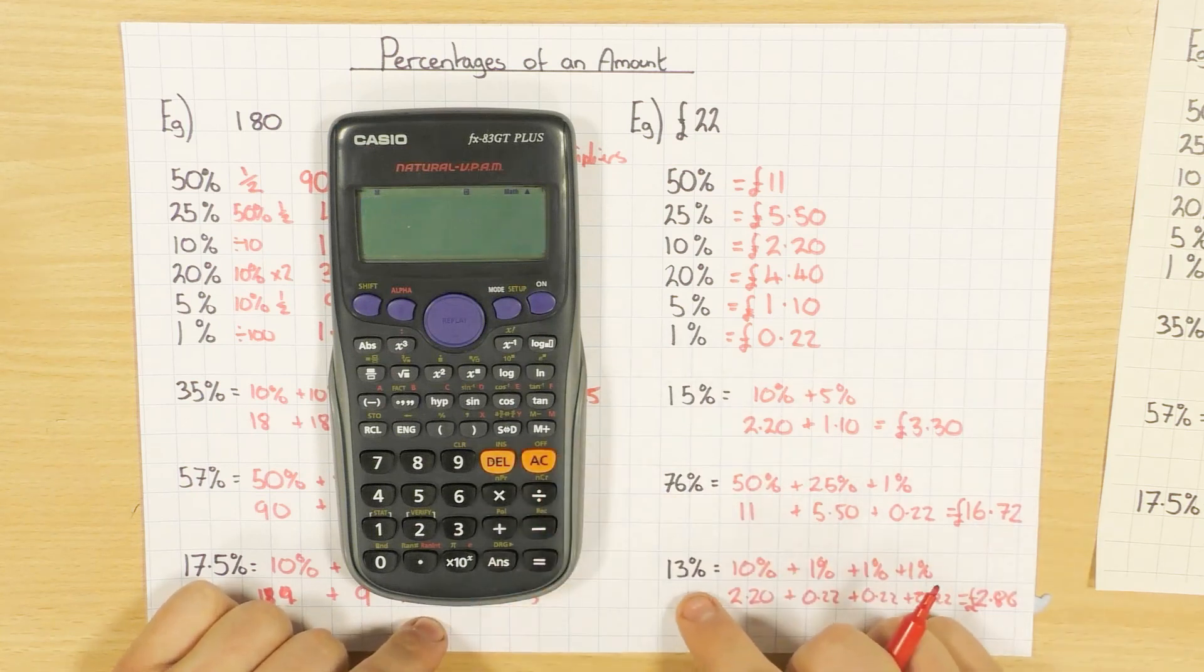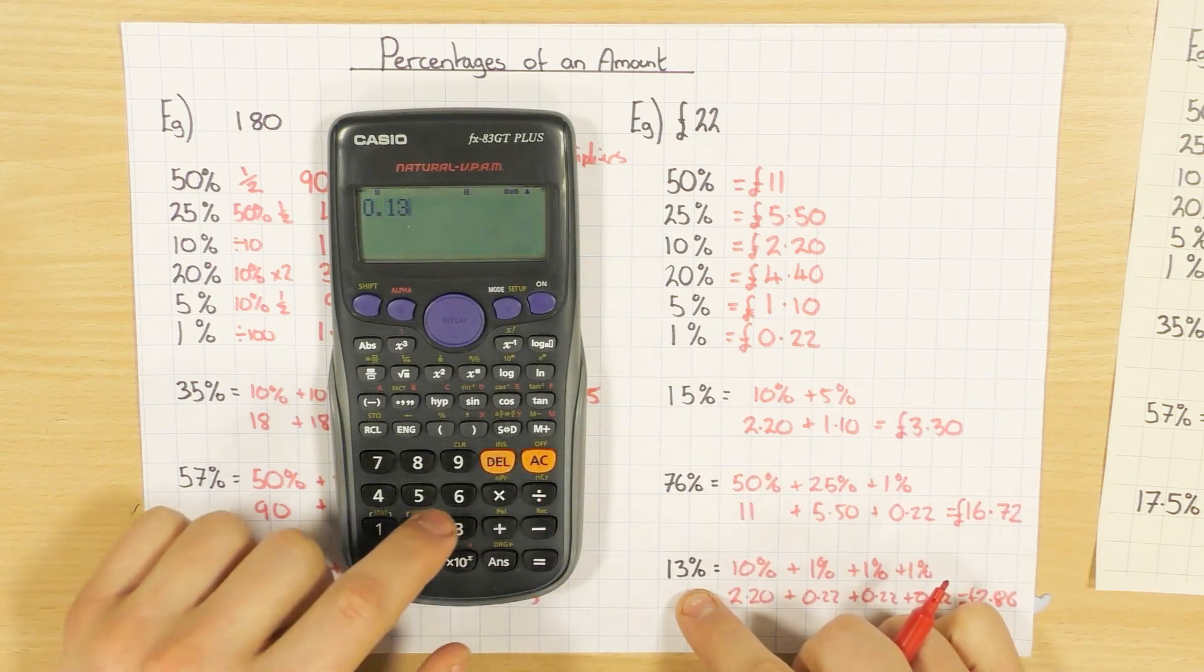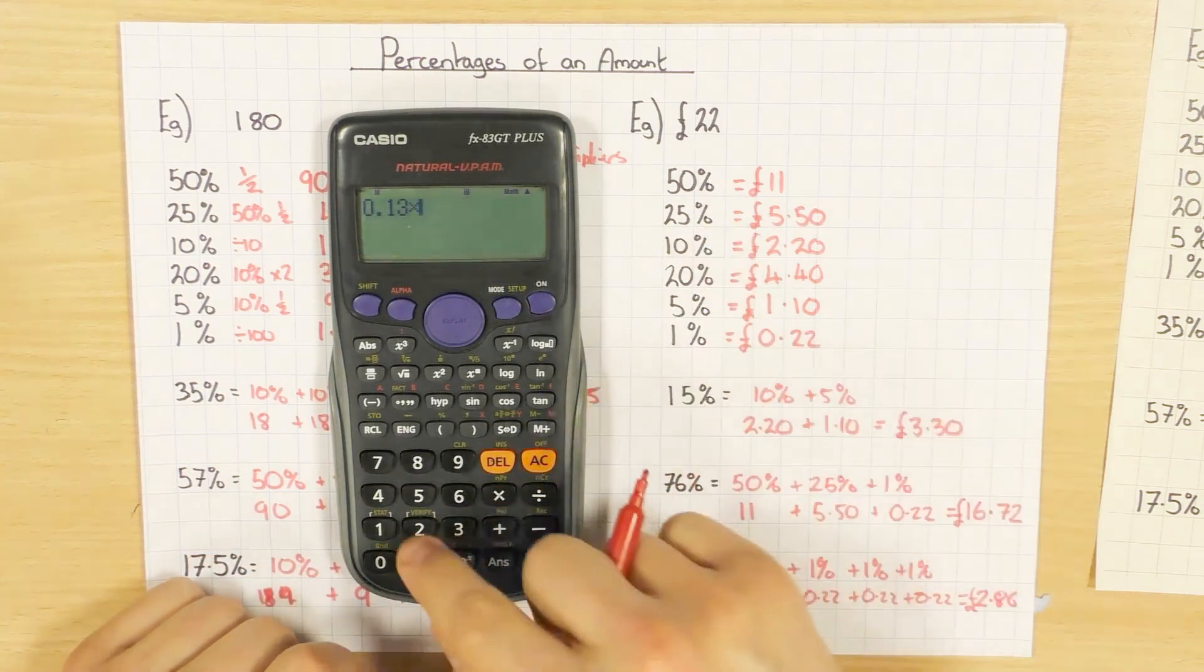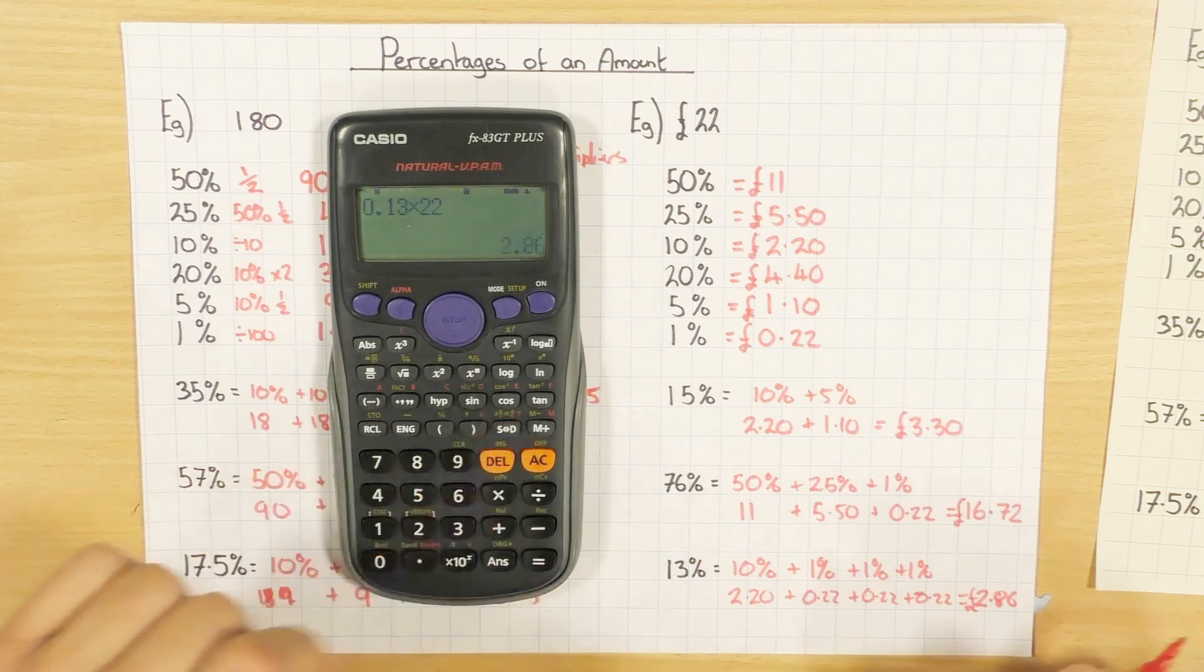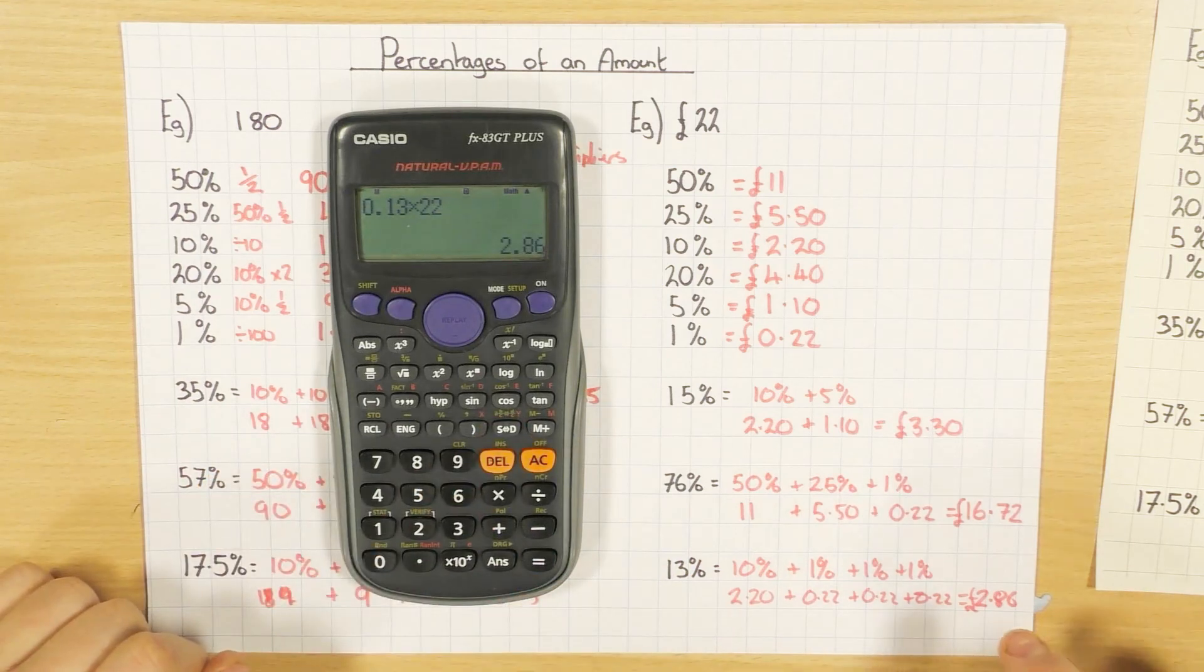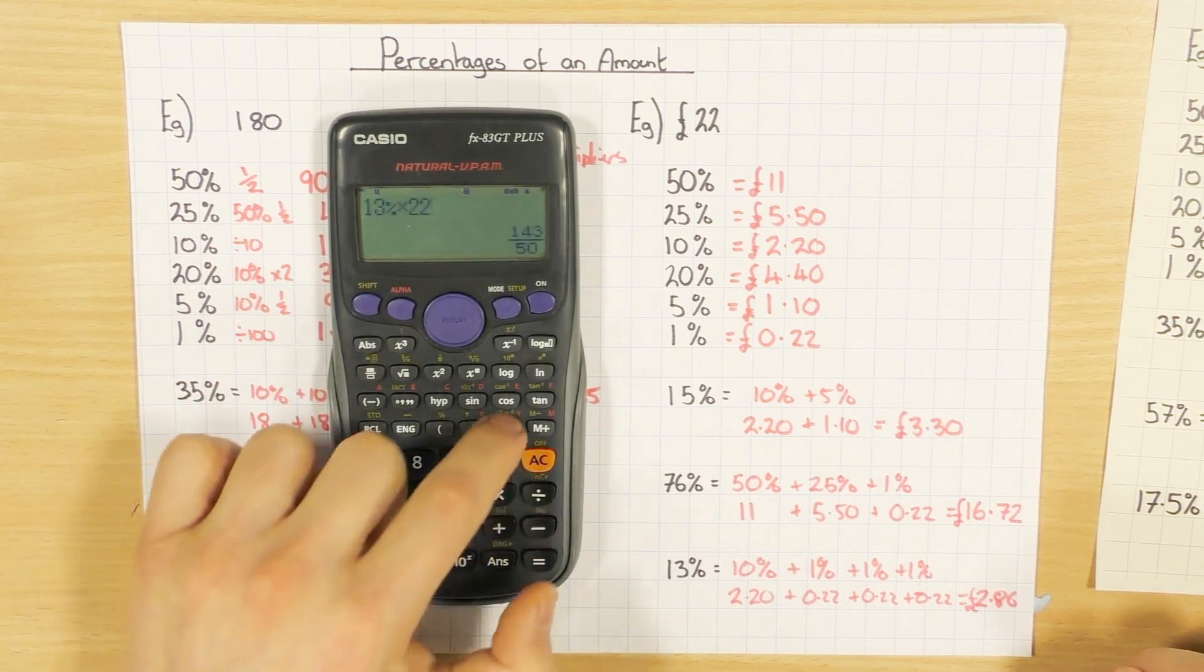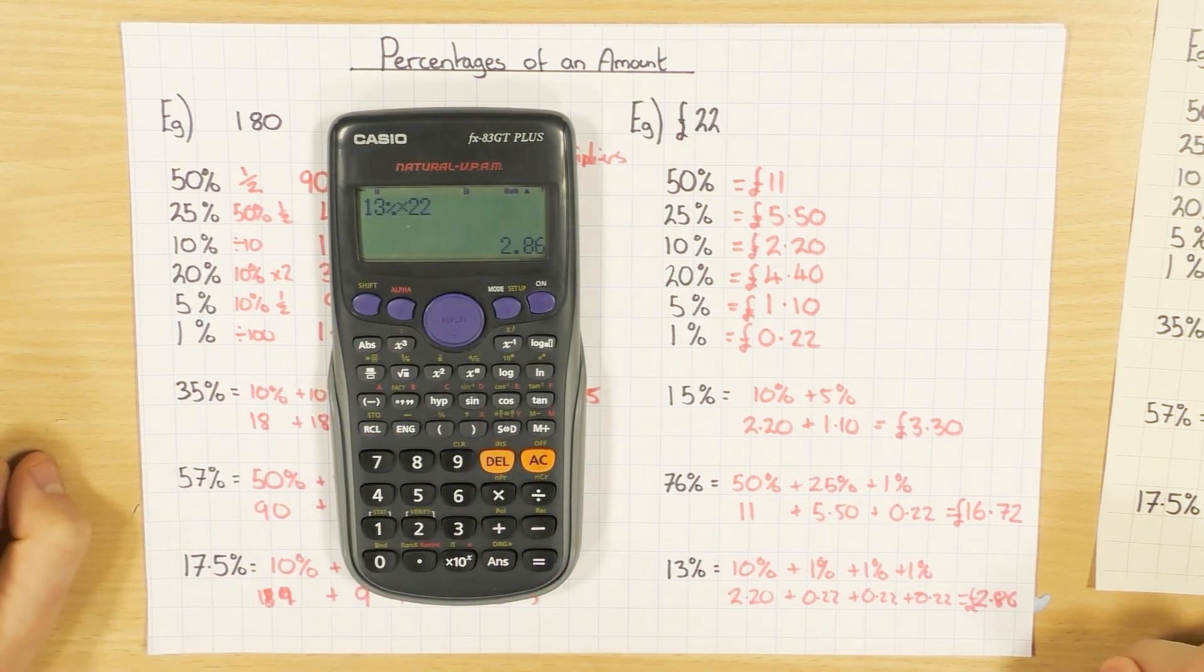And the last one, if you're still with me, 0.13 would be the decimal multiplier, times that by the 22. We get £2.86. Or you could have done it using the percentage button, which gets you the same answer.